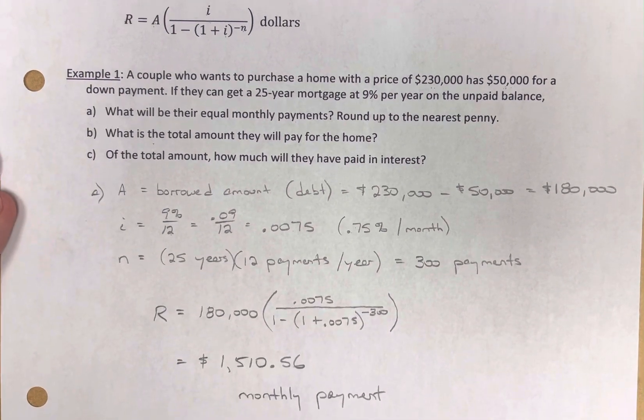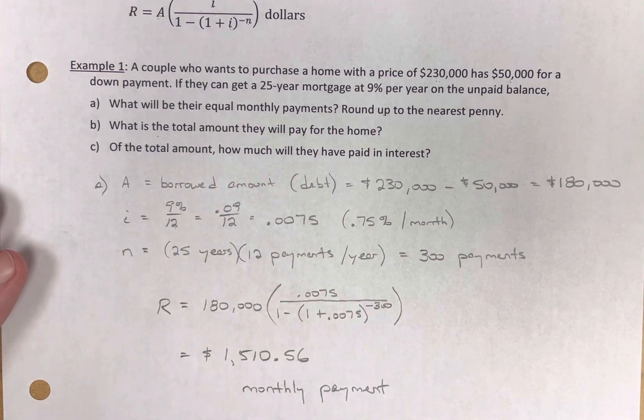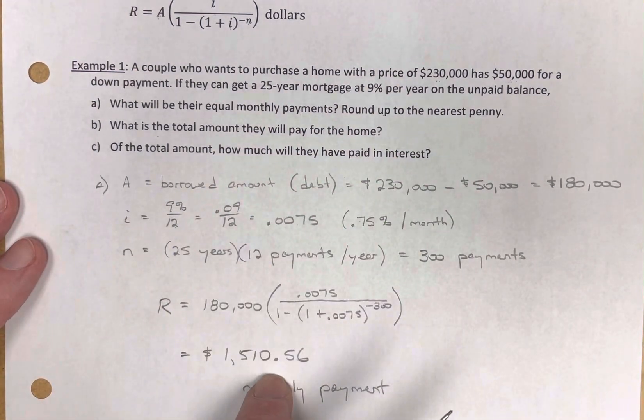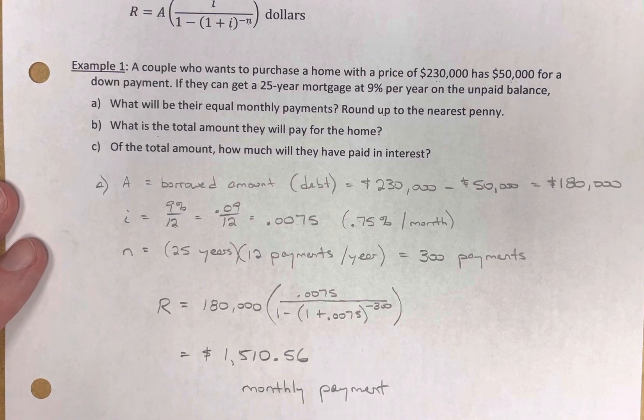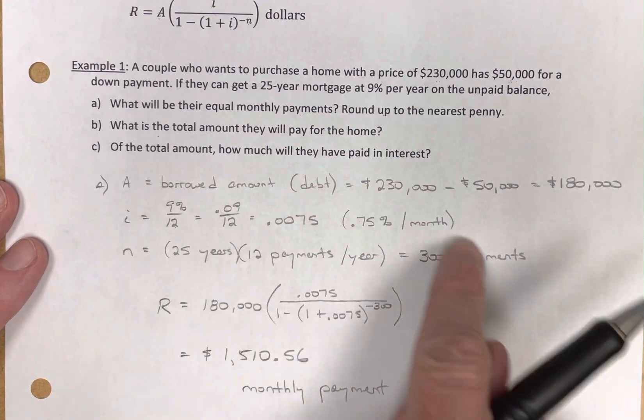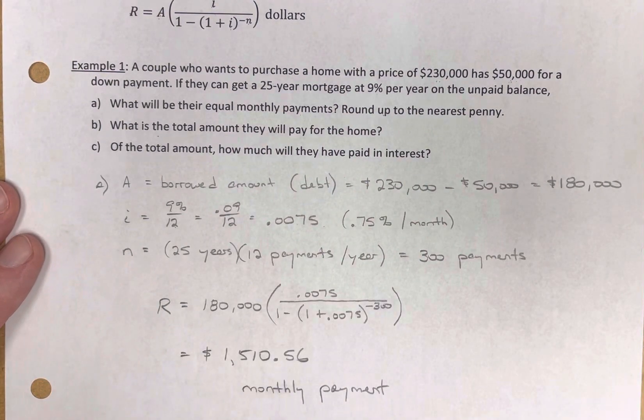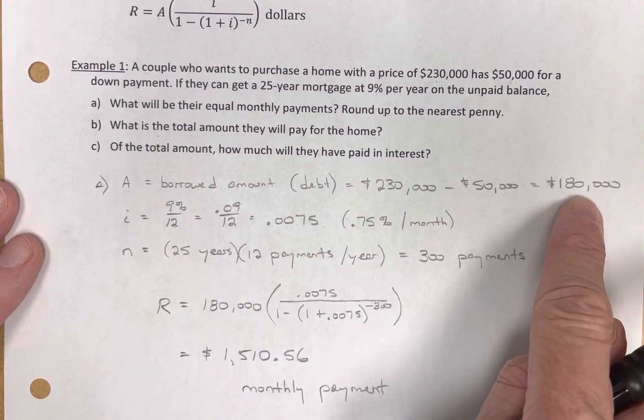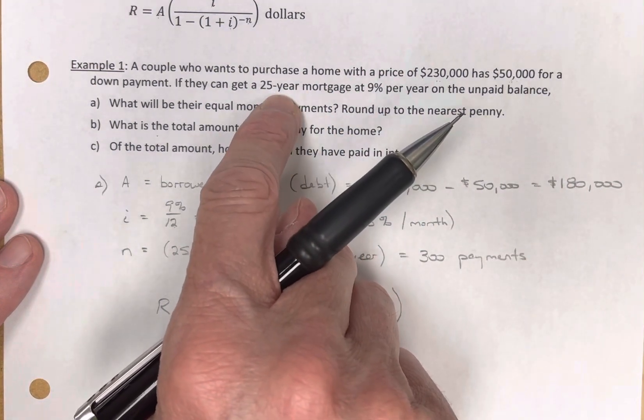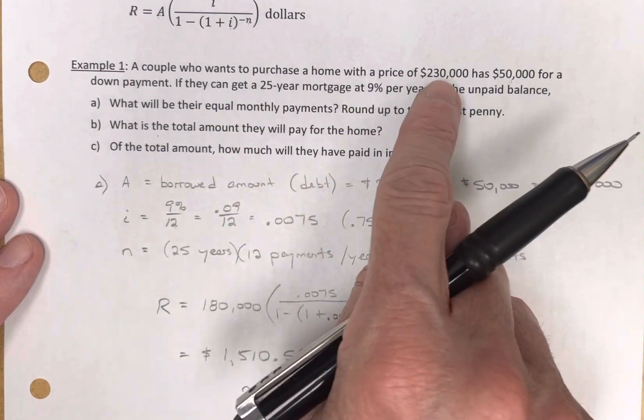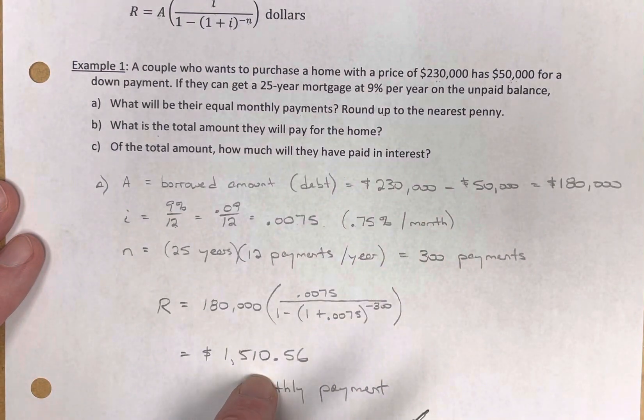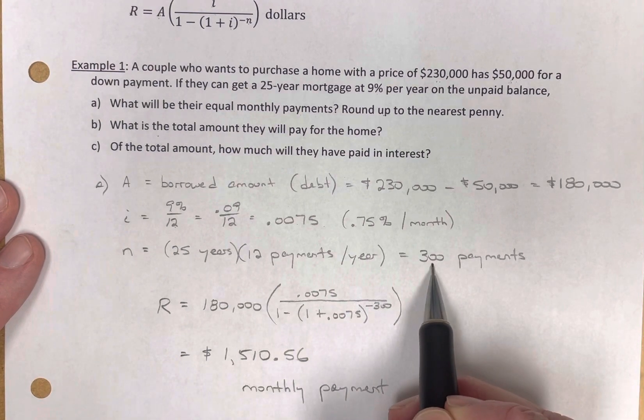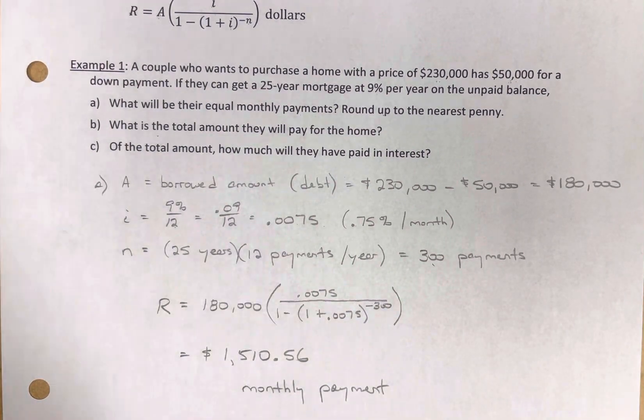So for those who have borrowed money for a home, here's the math behind how your monthly payment was calculated. For those who are going to borrow money for a home or for a car, this is how they will calculate how much your monthly payment is going to be. So this couple, they're going to borrow $180,000 over 25 years, which means they will be paying $1,510.56 every month for 300 payments or 300 months.